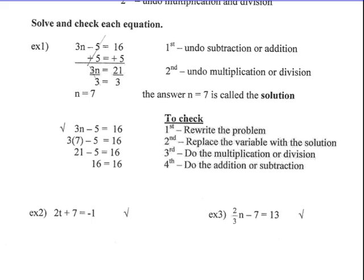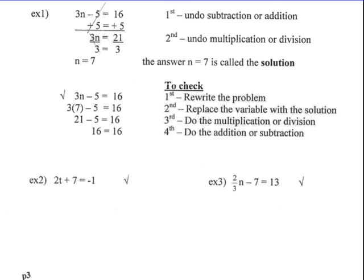To check this answer, you're going to rewrite the problem. You're going to replace the variable with what you believe the answer is, n equals 7. So 3 times 7 — we're going to put that into the solution. 3 times 7 is 21. 21 minus 5, does it equal 16? 16 equals 16 — we've got the right answer.